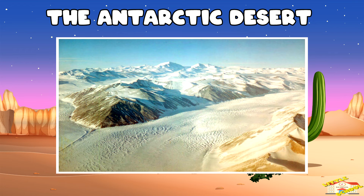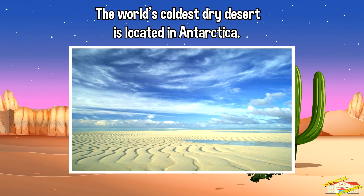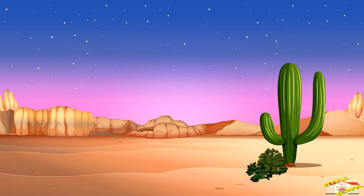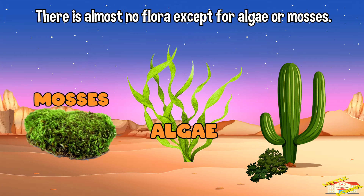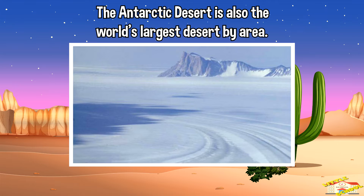First is the Antarctic Desert. The world's coldest dry desert is located in Antarctica. There is almost no flora except for algae or mosses. The Antarctic Desert is also the world's largest desert by area.